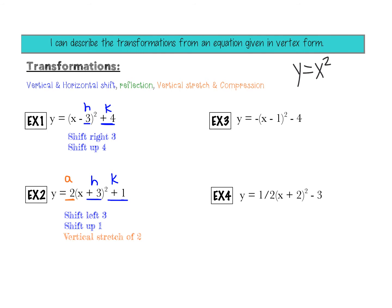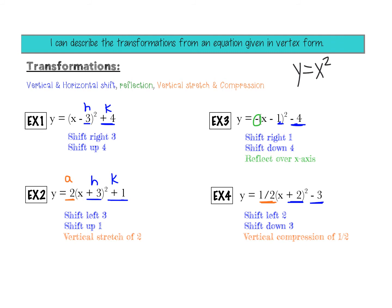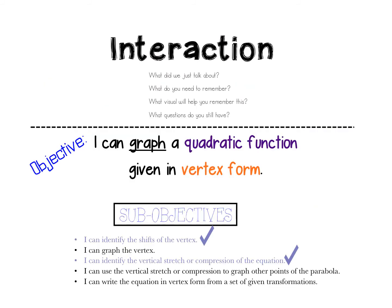Pause the video and try examples 3 and 4 on your own. In example 3, it shifts right 1, down 4, and reflects over the x-axis — so instead of going over 1 up 1, it goes over 1 down 1 since A is still 1 in magnitude, just negative. In example 4, it shifts left 2, down 3, and the A value of 1/2 causes compression, so everything moves in half of what it normally would.